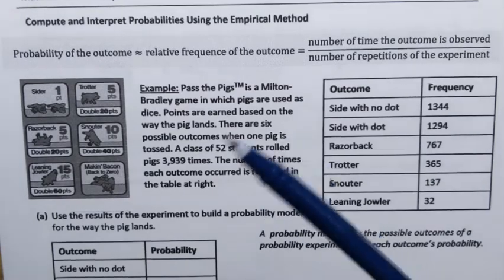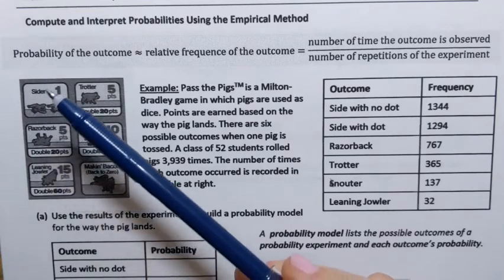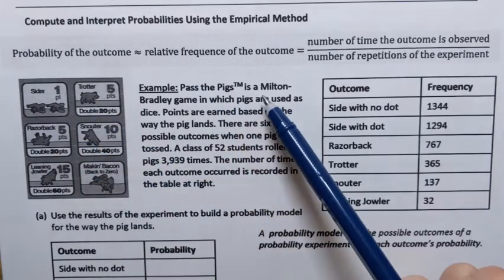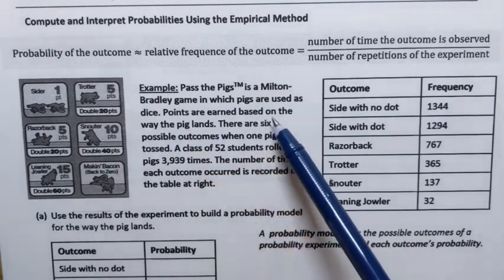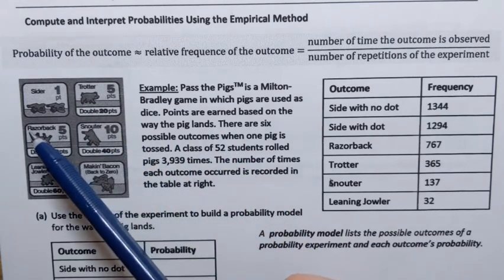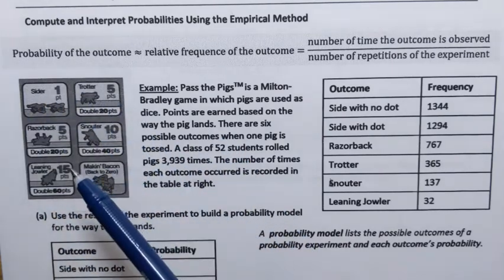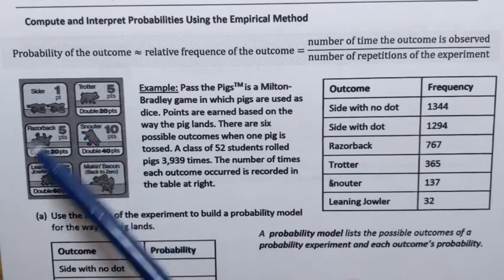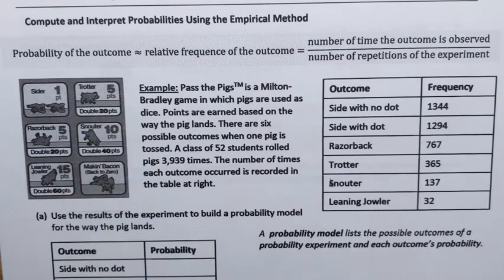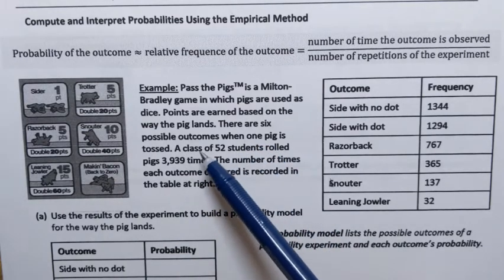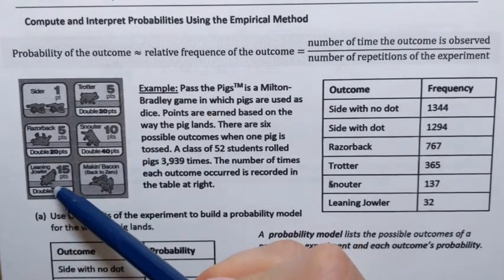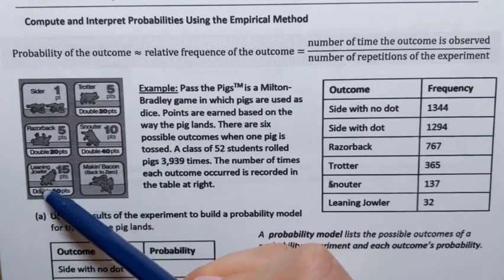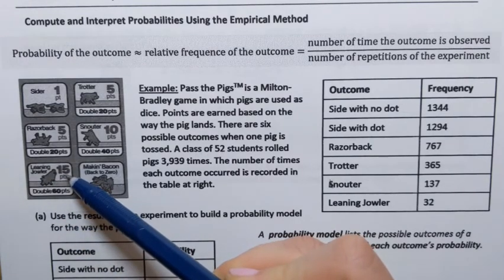Let's read this example. They're talking about a game called Pass the Pigs. In this game, pigs are used as dice. Points are earned based on the way the pig lands. Depending on which side the pig lands, you get a different number of points. There are six possible outcomes when one pig is tossed, but it's much harder to toss the pig so that it lands in certain positions, which is why you get so many points.